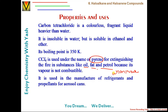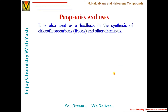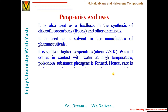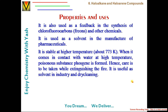CCl₄ is used in the manufacture of refrigerants and propellants for aerosol cans, and as a feedstock in the synthesis of chlorofluorocarbons (freons) and other chemicals. It is also used as a solvent in pharmaceutical manufacture. It is stable up to about 773 K (500°C), but when in contact with water at high temperatures, it converts to phosgene — so water must never be used alongside CCl₄ as a fire extinguisher.